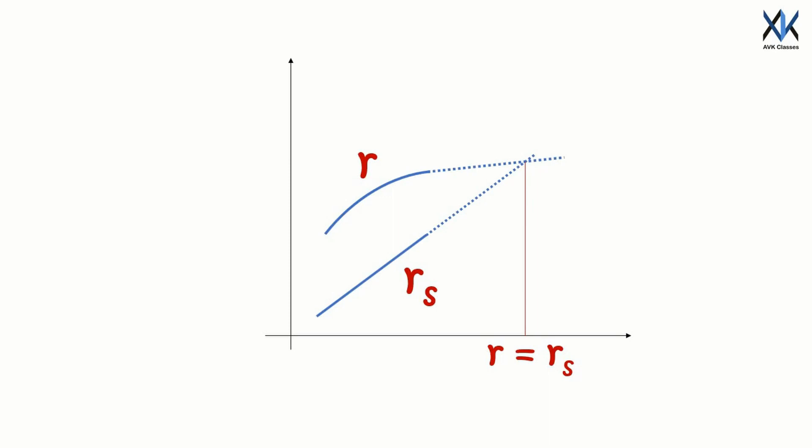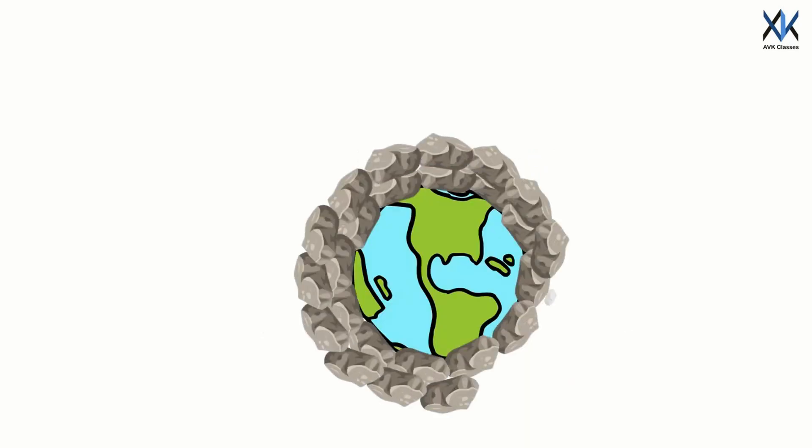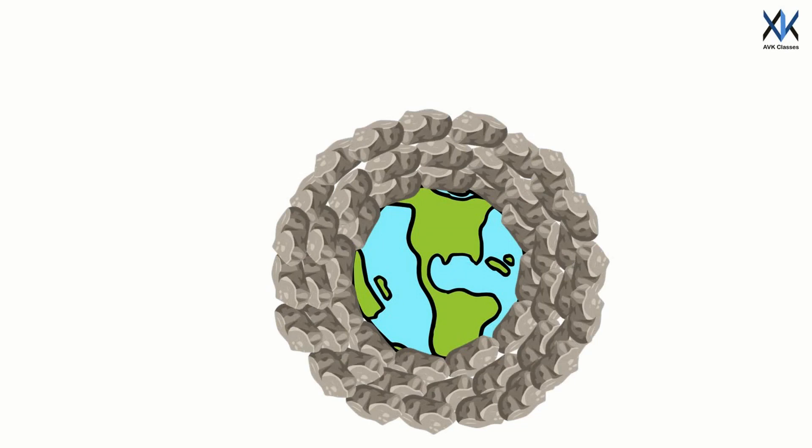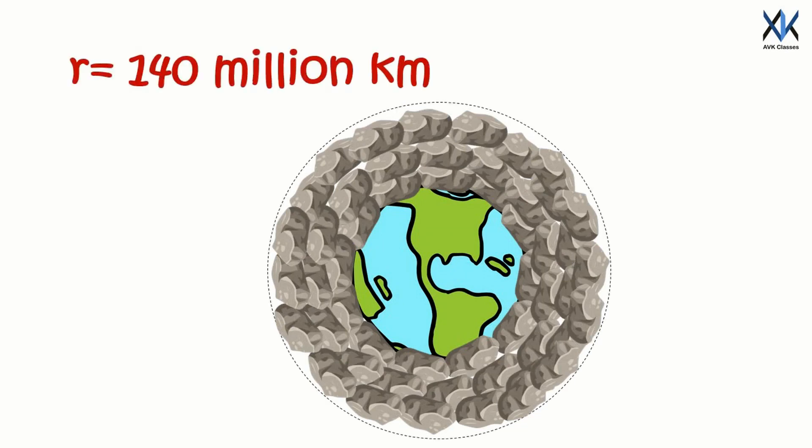So you can turn any given object into a black hole, well at least in theory, just by knowing its density and volume. By calculations for Earth, you have to add mass up to a radius of 140 million kilometers before it turns into a black hole.